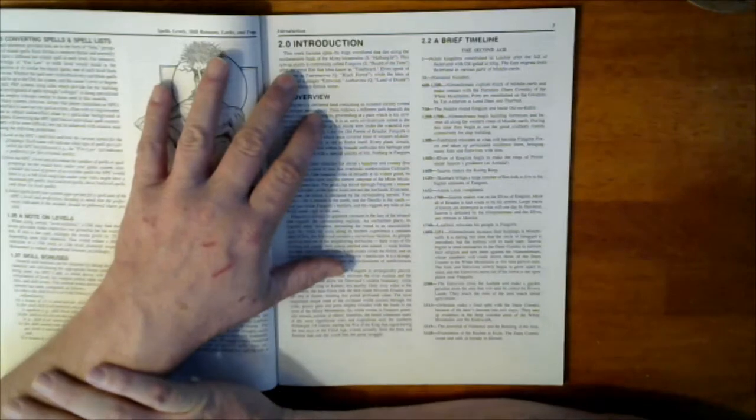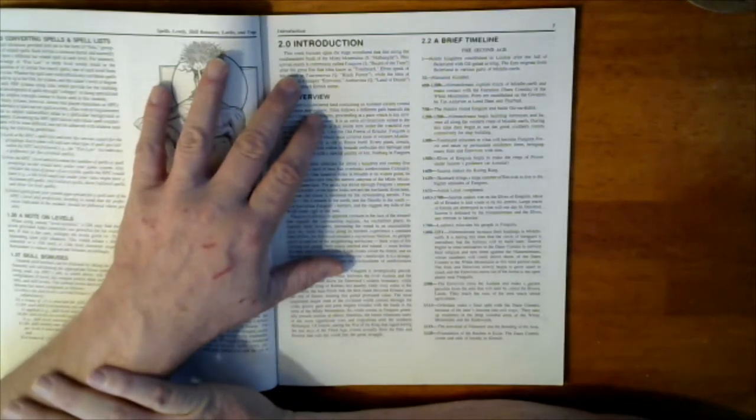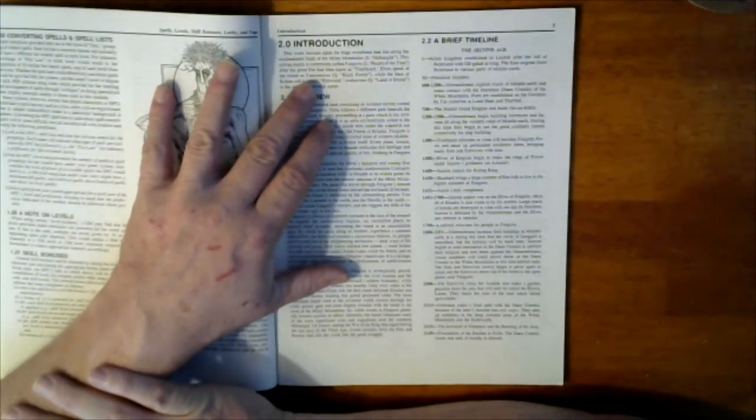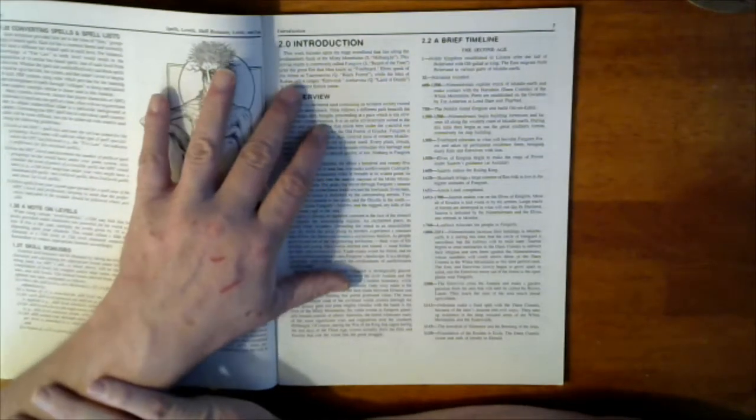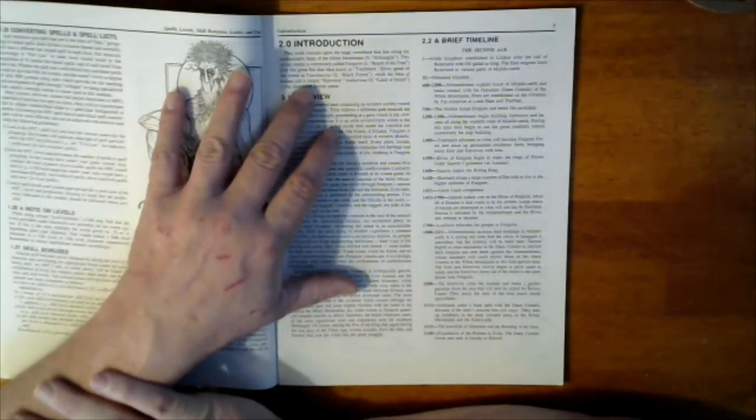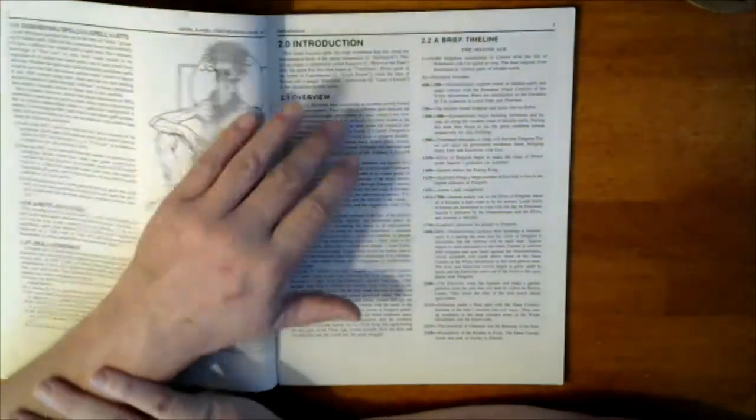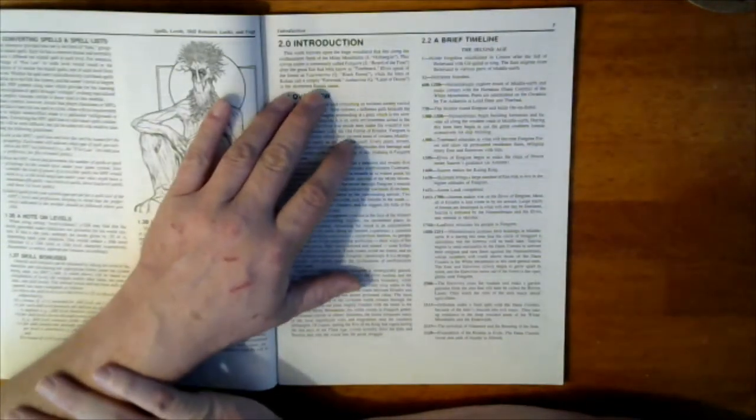This work focuses on the huge wood that lies along the southeastern flank of the Misty Mountains. This sylvan realm is commonly called Fangorn, after the great Ent the men know as Treebeard. Elves speak of the forest as Taur-nu-Fuin, the Black Forest. While Men of Rohan simply call it the Entwood.